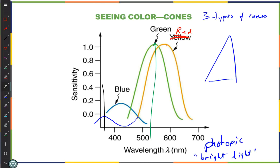Each cone can detect about 100 different levels. In computers you use 0–255 per channel, which is about twice as many gradations as the eye can determine. Your color gamut is 100 × 100 × 100 = roughly one million colors. If you had a fourth type of cone, you'd be able to see 100 million colors. People called tetrachromats exist — they're almost exclusively women — and they can see many more color variations.